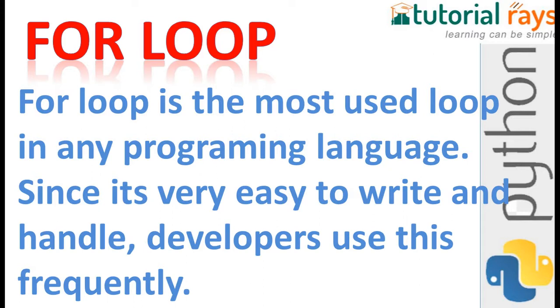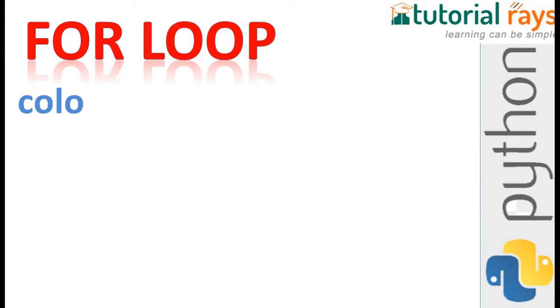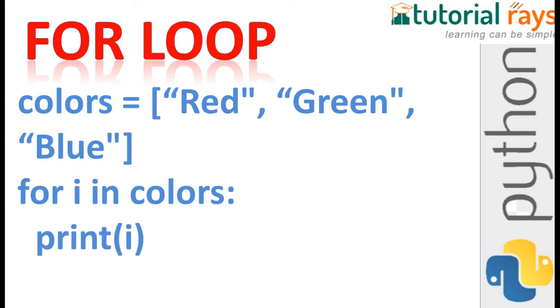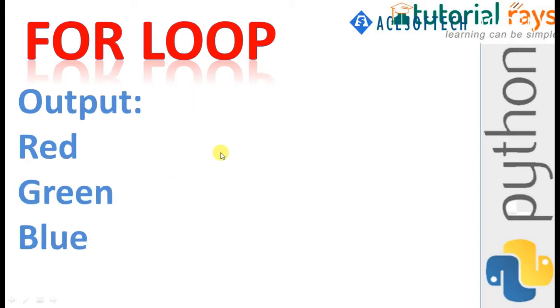In this video you will see how for loop works in Python. We have taken a variable called colors containing red, green, blue. The syntax to write a for loop is: for i in colors — here colors is the array variable — and then we print i. In that case its values red, green, and blue will be displayed. The output will be red, green, blue as expected.